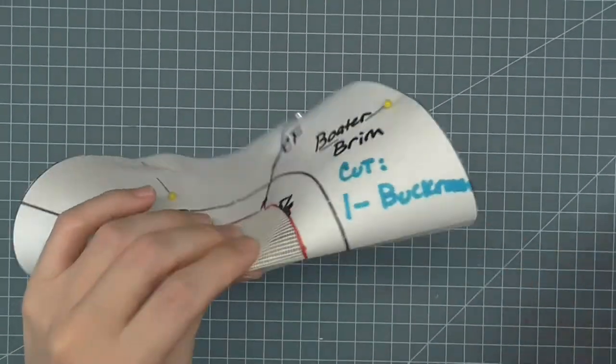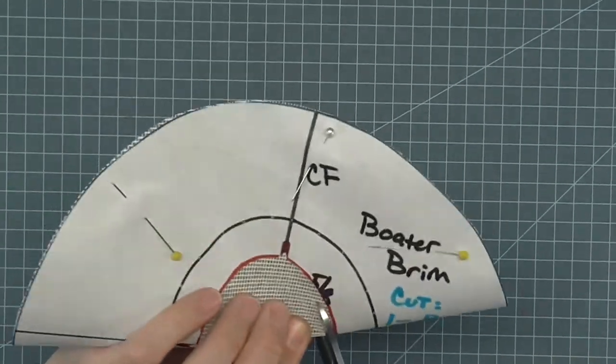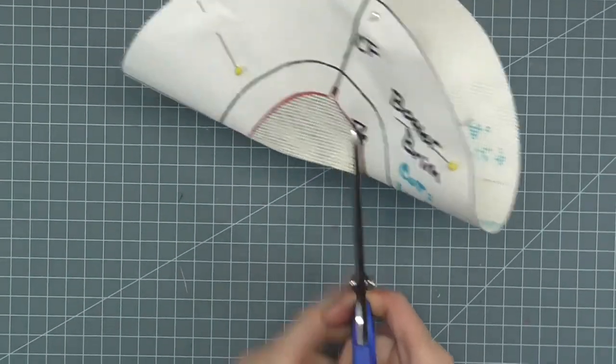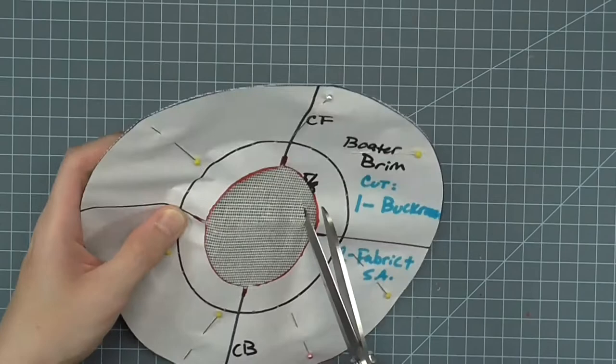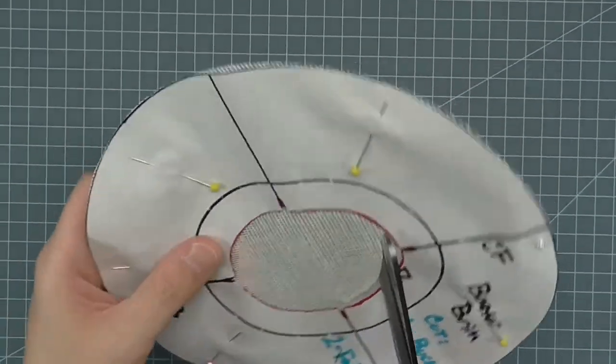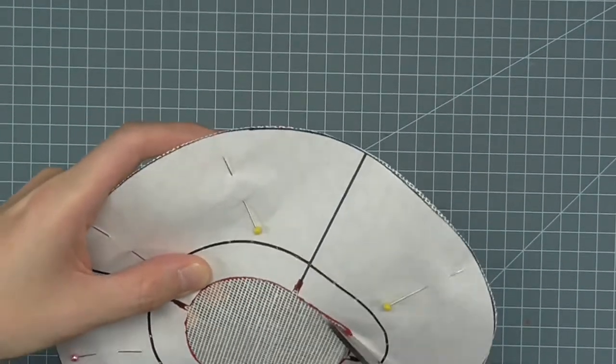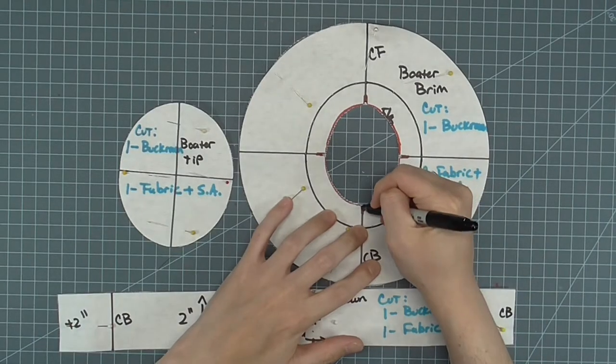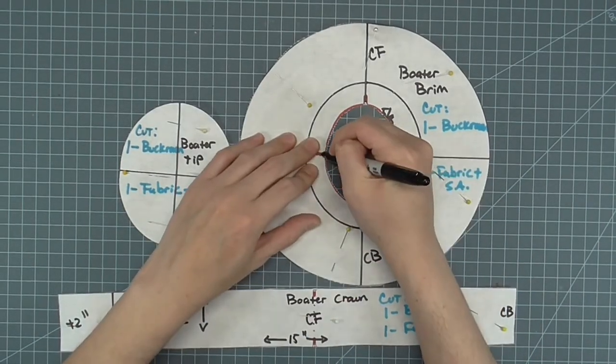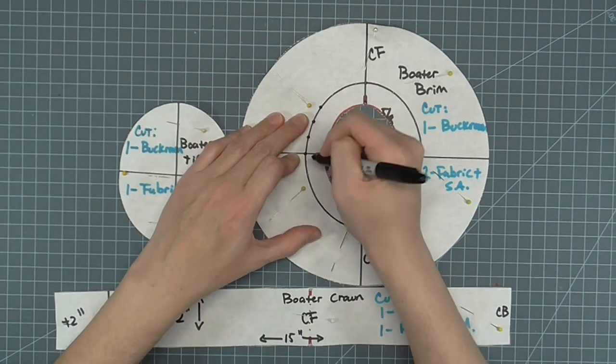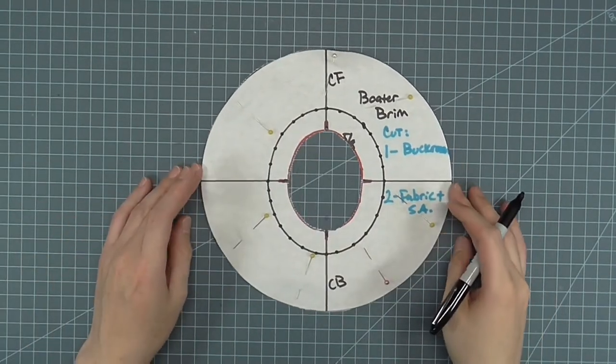On the brim, cut out the center hole outside the seam allowance. Mark all the notches onto the buckram. I'm using a marker so you can see what I'm doing, but use a pencil for less noticeable lines through the fabric.